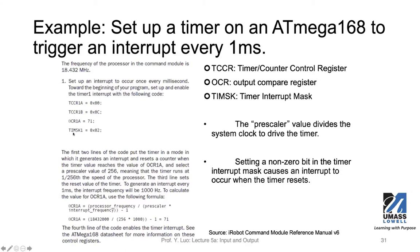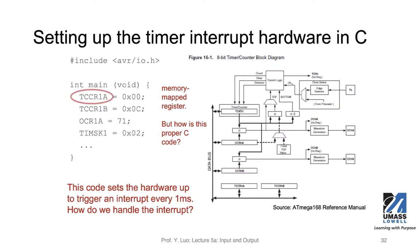Finally, we use the last line to enable the timer interrupt. With these four lines of code, we are able to set up the one-millisecond interrupt so that the microprocessor will receive the interrupt every one millisecond. If we then tell the microprocessor which interrupt service routine is associated with this interrupt, we are all set to achieve our goal of using that timer to do something every millisecond.